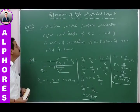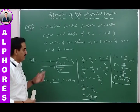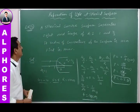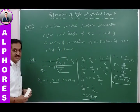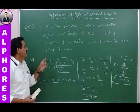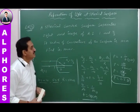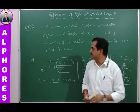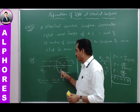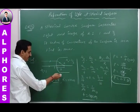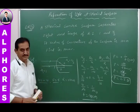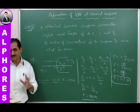The problem is related to a spherical refracting surface. A spherical convex surface separates media of refractive indices 1 and 4/3. If the radius of curvature of the spherical surface is 10 centimeters, find its power.